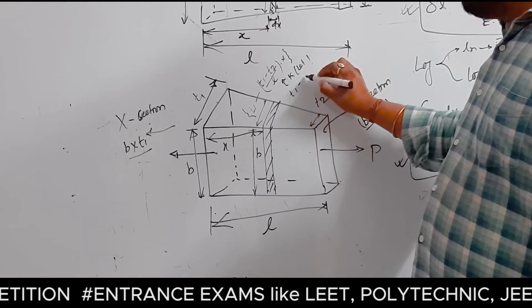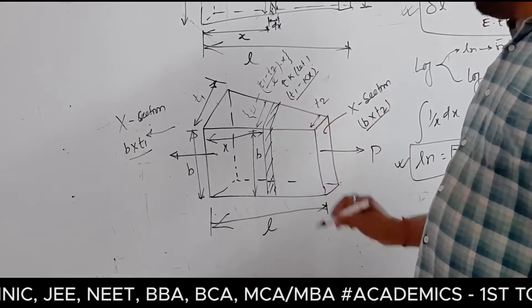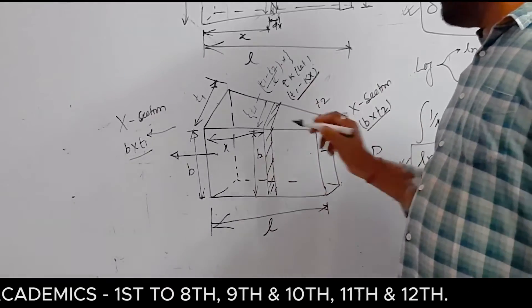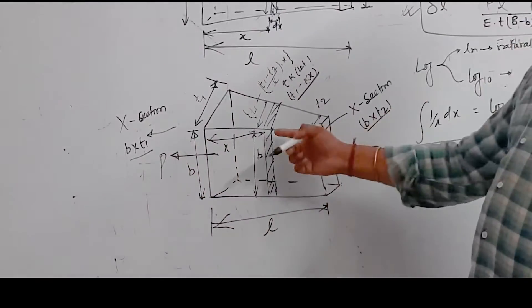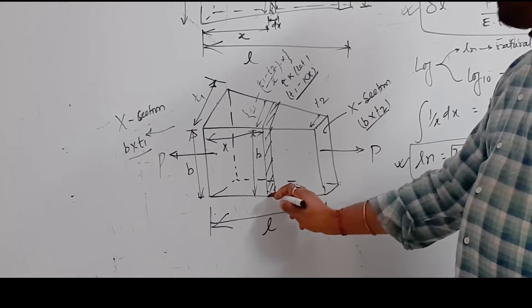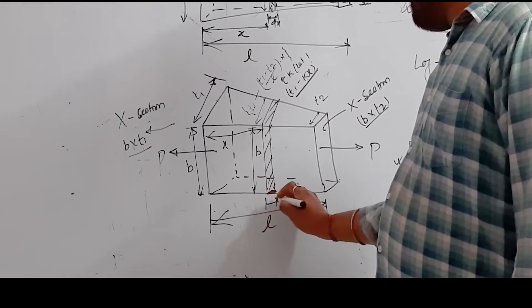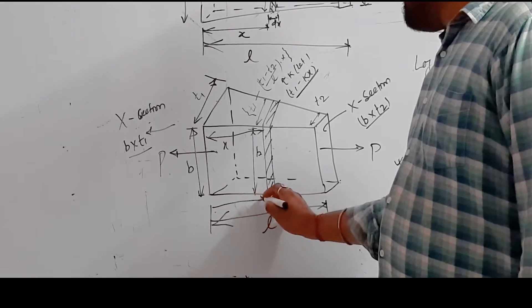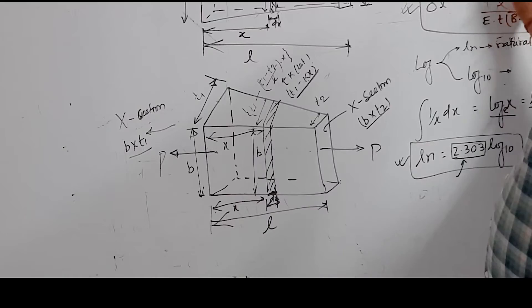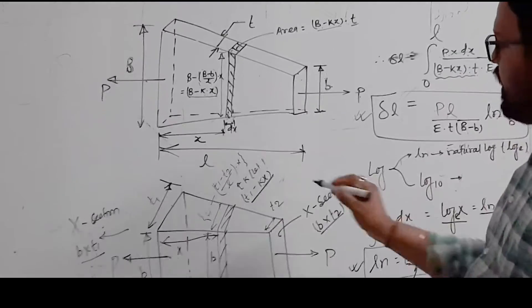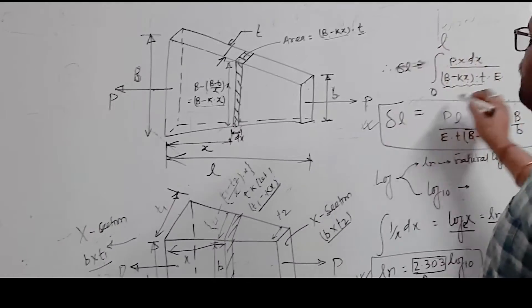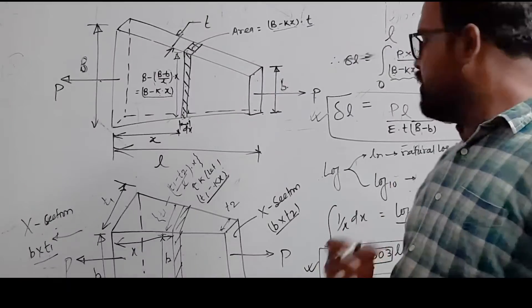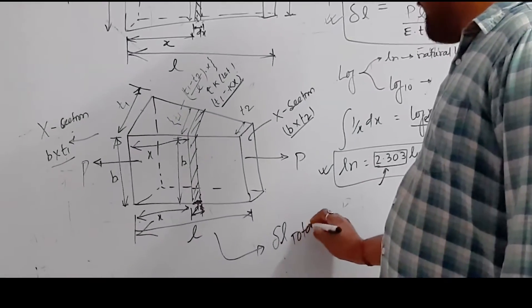So here the area is B times (T1 minus kx). If the area is given, then the deformation is P dx divided by the area, which is B into (T1 minus kx) into E. Integrate from 0 to L and you'll get the answer. So I'm leaving this for you guys to solve.